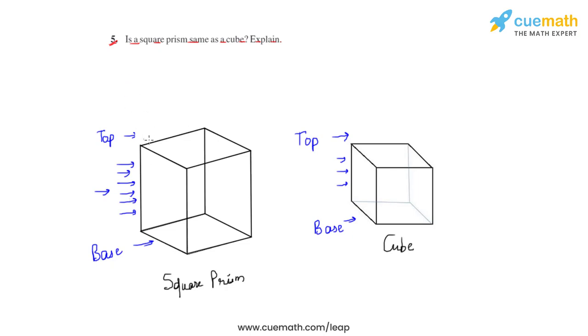So there are two conditions for this. To answer this question we can conclude that if the lateral faces of the square prism are square in shape, then it is a cube.